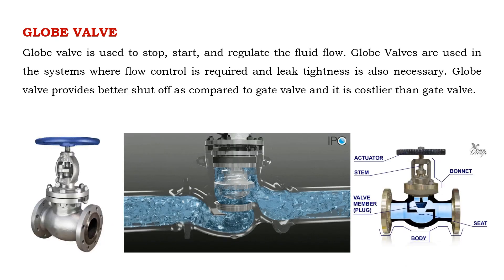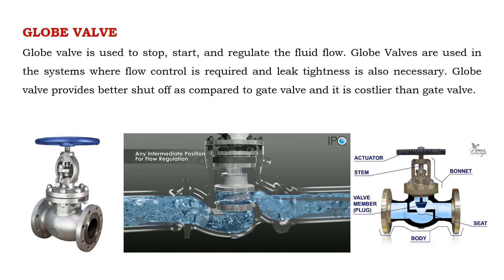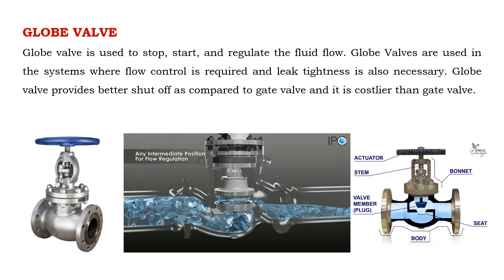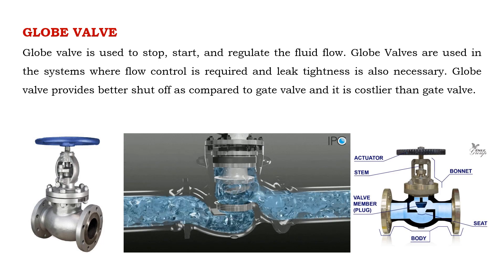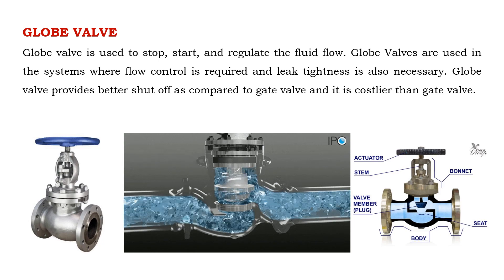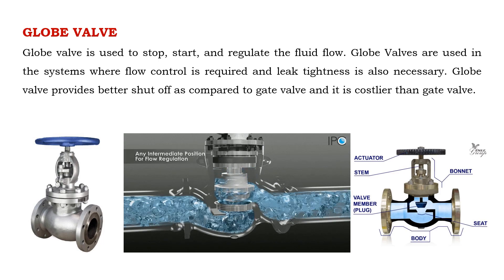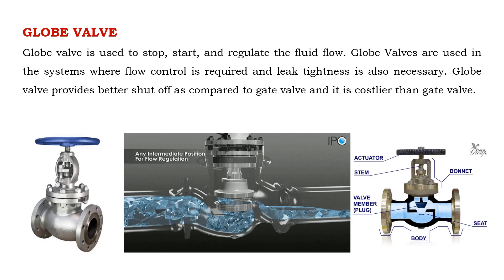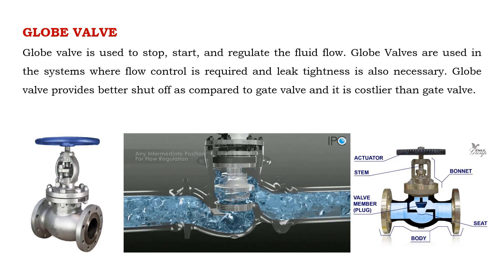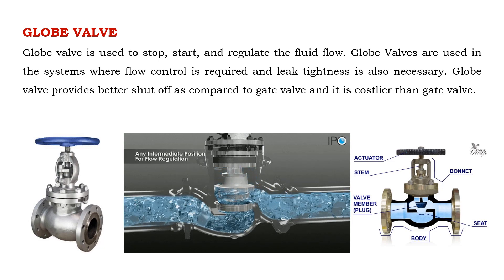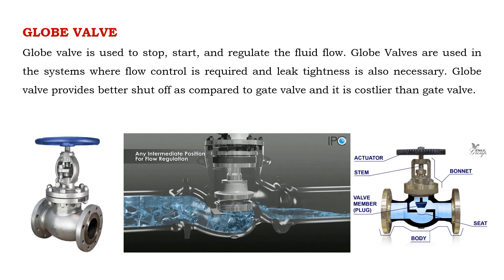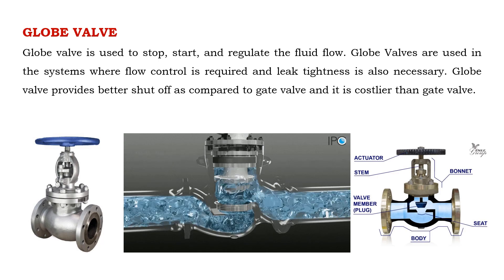Globe valve is used to stop, start, and regulate the fluid flow. Globe valves are used in systems where flow control is required and leak tightness is also necessary. Globe valve provides better shut off as compared to gate valve, and it is costlier than gate valve.